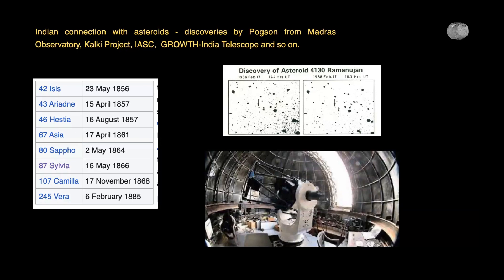In the 1980s there was a project in Kavalur with a 24-inch telescope to detect asteroids called Project Kalki. The first asteroid discovered was called Ramanujan — the discovery image shows the asteroid marked by arrows changing its position. Now in Hanle in Ladakh we have four telescopes — two optical and two Cherenkov. One optical telescope is called the GROWTH India Telescope, part of an international network called the GROWTH Network — telescopes all over the world covering all longitudes so you can see the sky at any given time, looking for objects which suddenly brighten or move.